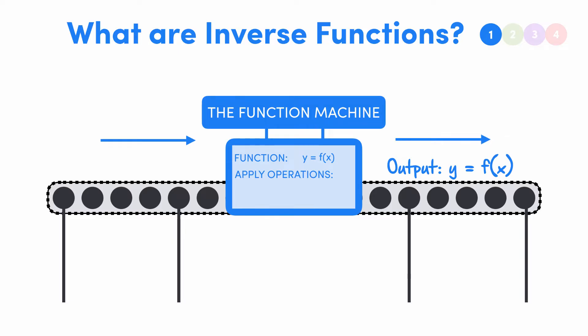So a particular function might be y equals 4x plus 1. So what we do is plug in our input x, then inside the machine we apply the operations of multiplying by 4 and then adding 1. And then we get our output, which of course depends on what our value of x is going to be.